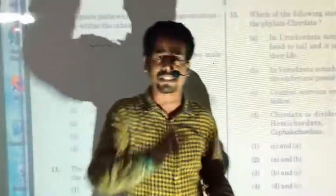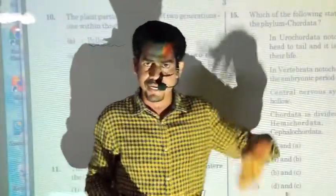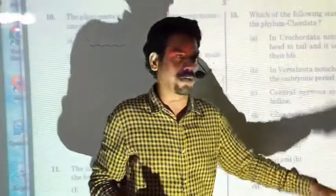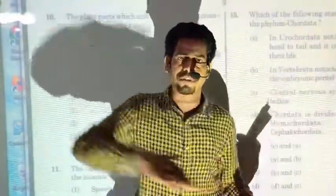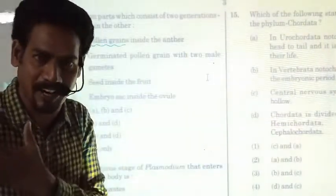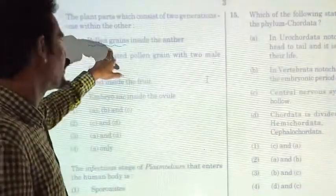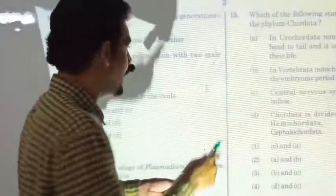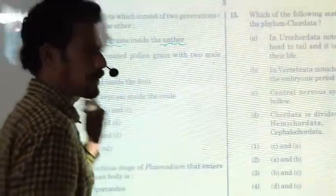In algae, the sporophyte is just the zygote — it immediately undergoes meiosis, restoring the haploid phase. In higher plants like angiosperms and gymnosperms, the sporophyte is the dominant plant body — the trees and plants we see around us. The pollen grain gametophyte has three cells, and the pollen mother cells (PMCs) in the anther represent the last cells of the sporophyte generation.